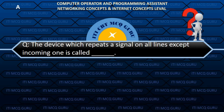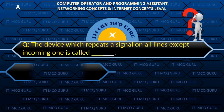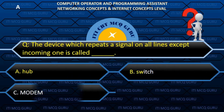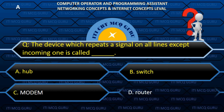The device which repeats a signal on all lines except the incoming one is called: A. Hub.